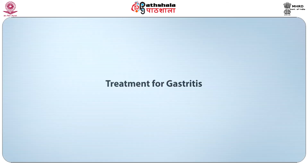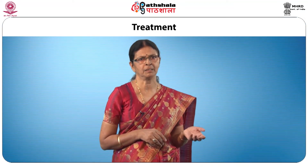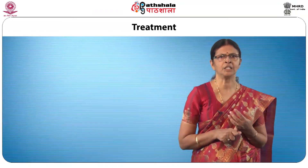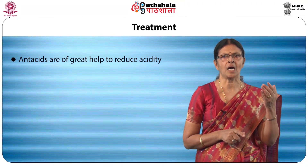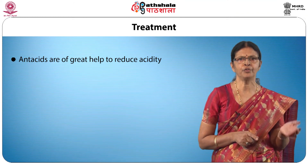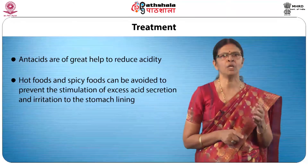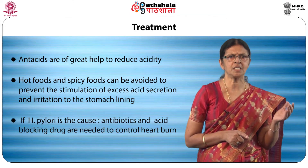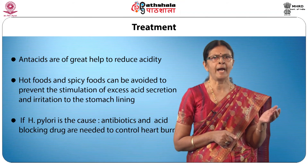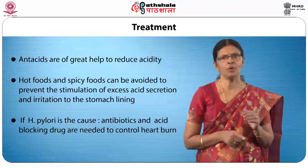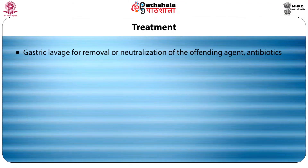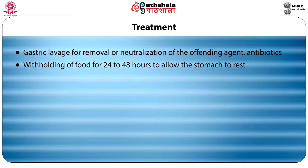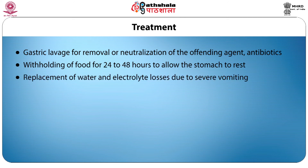Now let us deal with treatment. It is necessary for an individual with gastritis to reduce gastric acidity by including antacids. Hot and spicy foods should be avoided to prevent stimulation of excess acid secretion and irritation to the stomach lining. If H. pylori is the cause, the physician may prescribe antibiotics and an acid-blocking drug to control heartburn. Removal or neutralization of the offending agent by gastric lavage, along with antibiotics and withholding of food for 24 to 48 hours to allow the stomach to rest, is recommended. If vomiting is severe, replacement of water and electrolyte losses is crucial.